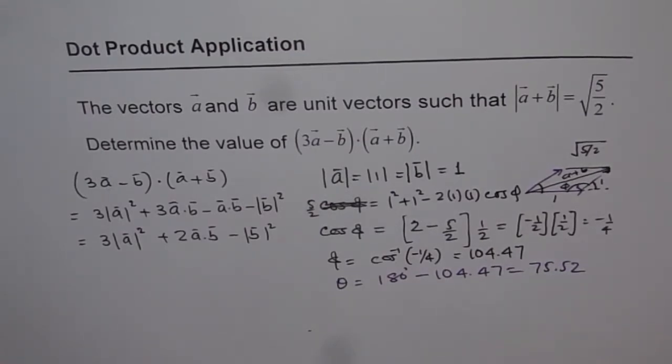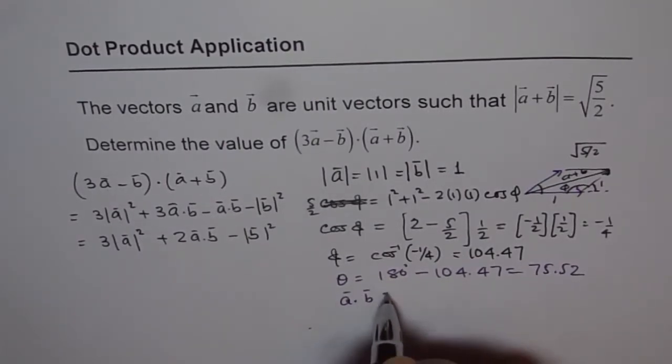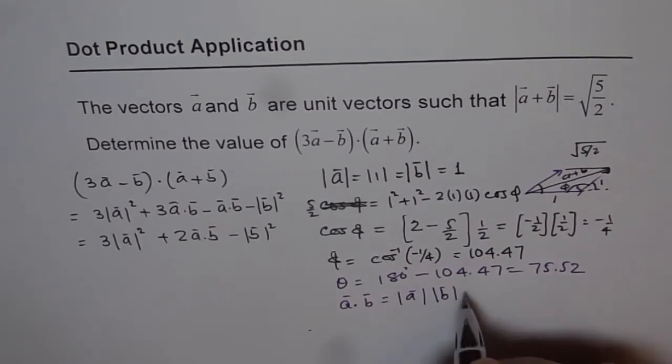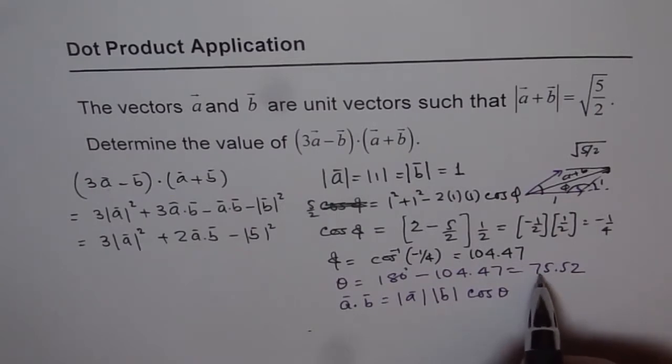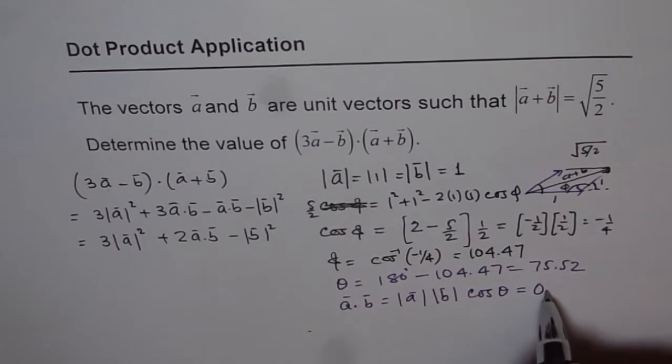Now we know theta, the angle between. Now, what is A dot B? So A dot B equals to magnitude of A times magnitude of B times cos of theta. Do you see that? That is cos of 75.52. So let us find what is cos of 75.52 equals to. It is 0.25.